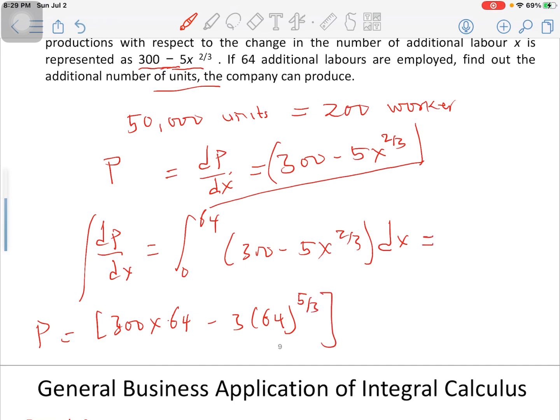So not to jump a step, let me write the integral. The integral is going to be 300x minus 3x to the exponent 5/3, and don't forget that we have a limit from 0 to 64.